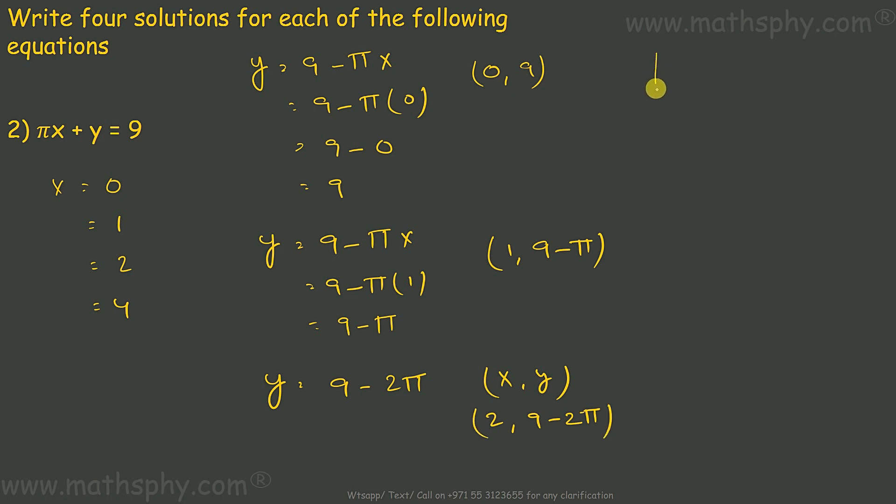One more can be, think of whatever comes to your mind. Let's take it as 4. So, y equals to 9 minus, x is 4. So, x is 4, y would be 9 minus 4 pi.